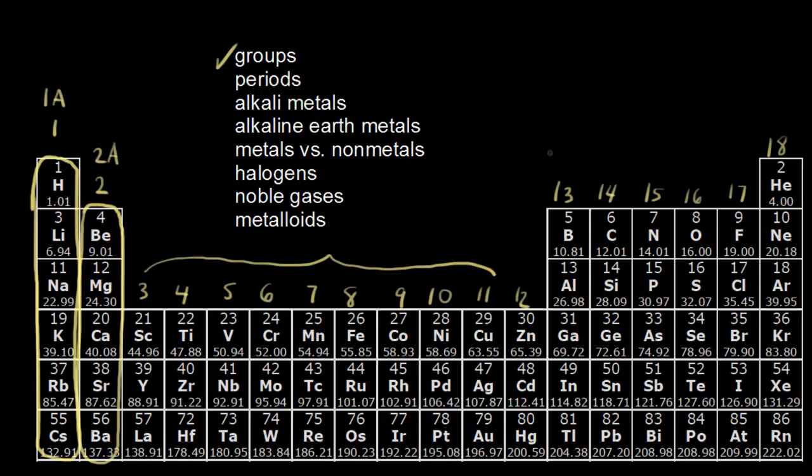So 1A, 2A, that would make this group 3A, group 4A, group 5A, group 6A, 7A, and finally 8A. And the second way of numbering your groups is useful when you're thinking about valence electrons.